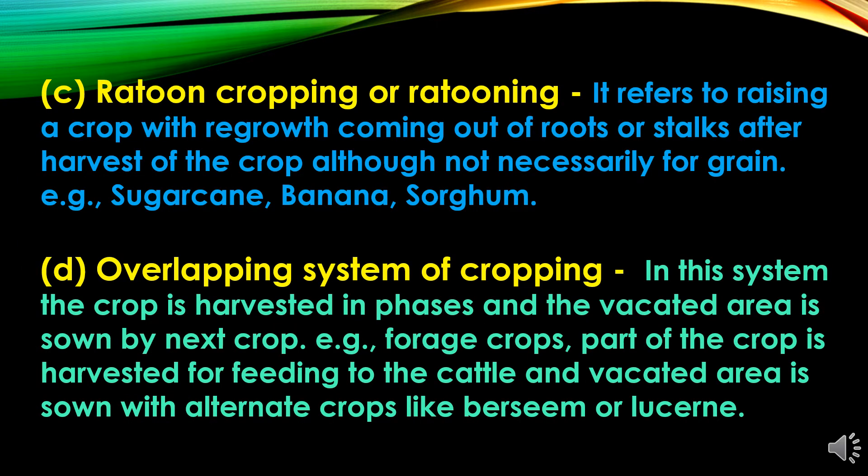The third type of multiple cropping is ratoon cropping. It refers to raising a crop with regrowth coming out of roots or stocks after harvest of the crop, although not necessarily for grain, like sugarcane, banana, and sorghum crops.